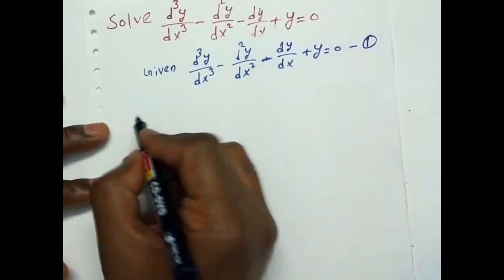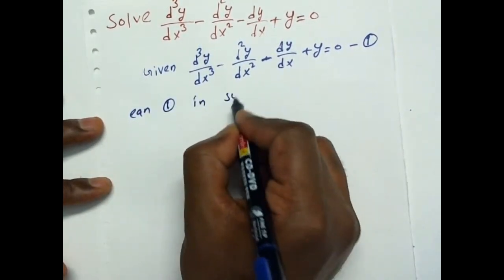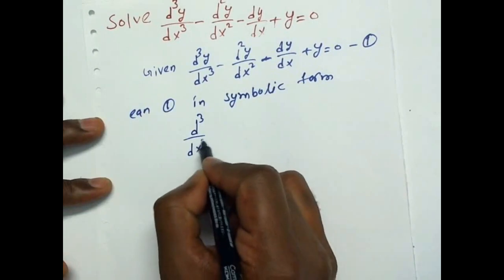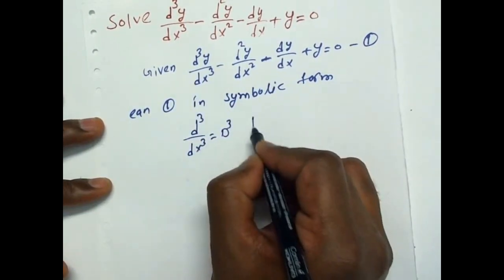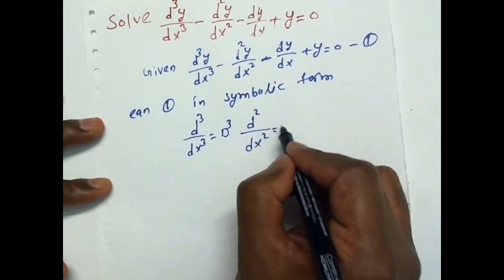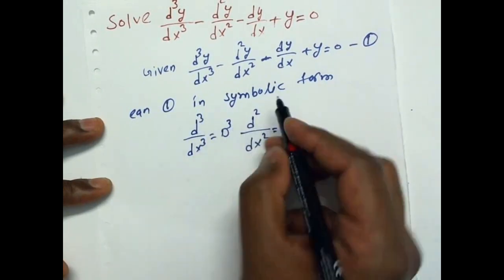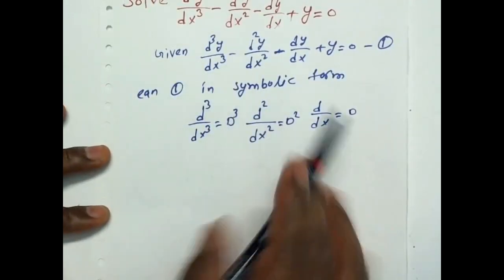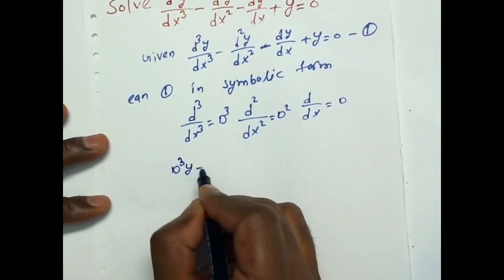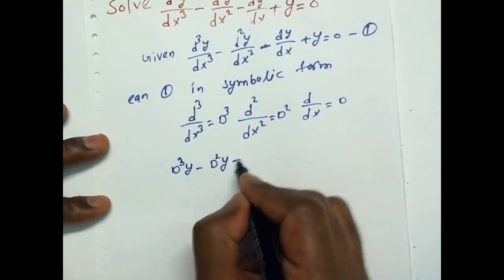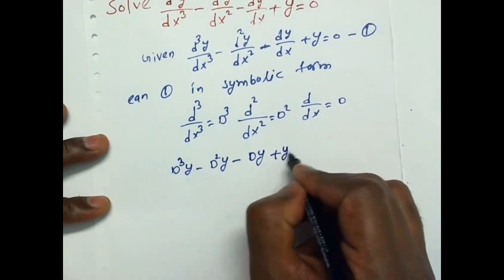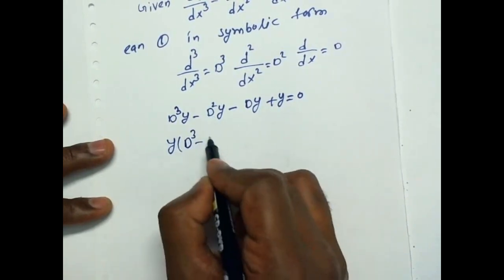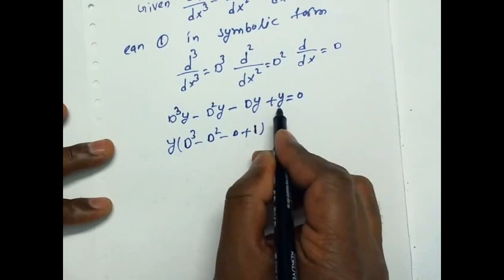We write the symbolic form — the capital D operator form. The equation becomes: D³ minus D² minus D plus 1, all multiplied by y, equals 0. Here D³ represents d³/dx³, D² represents d²/dx², and D represents d/dx.